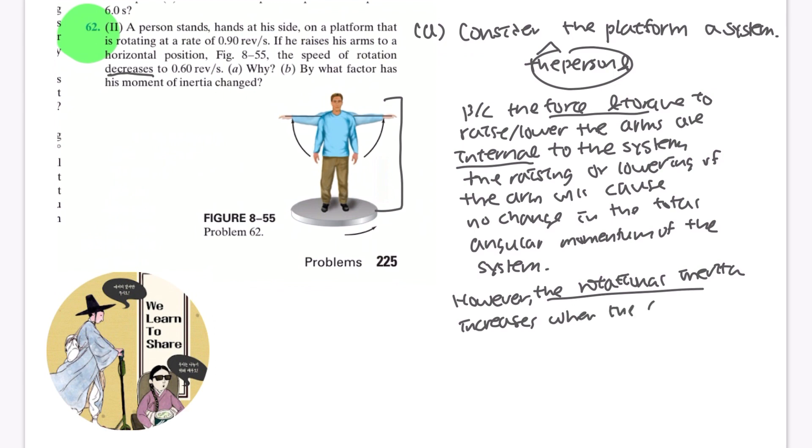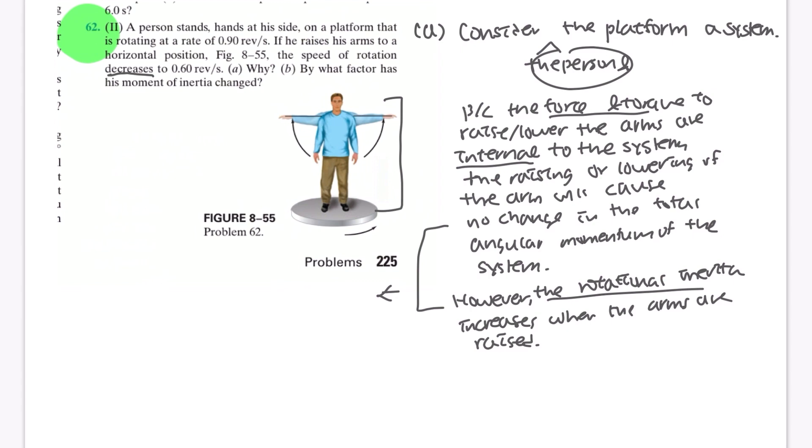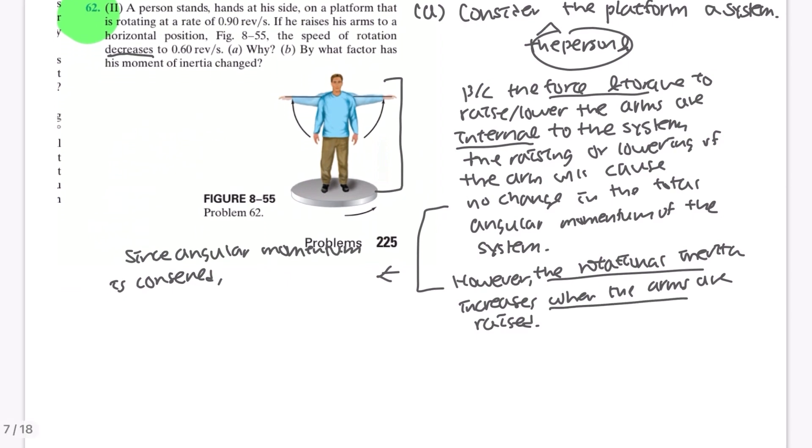So it is harder for the platform to rotate. Having these two facts, we can conclude that since angular momentum is conserved, but there is a change and there is an increase in inertia, rotational inertia...